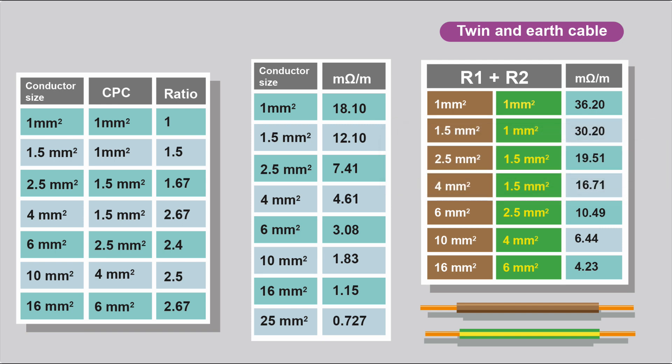And all I've done, as you see here, the 2.5 and the 1.5, they added the two columns together. So to save doing two calculations and then adding the results together, you can just combine the 2.5 and the 1.5, you'll get a milliohms per metre value of 19.51. And this is the value that you'll use when you're working out the length. We'll do an example.